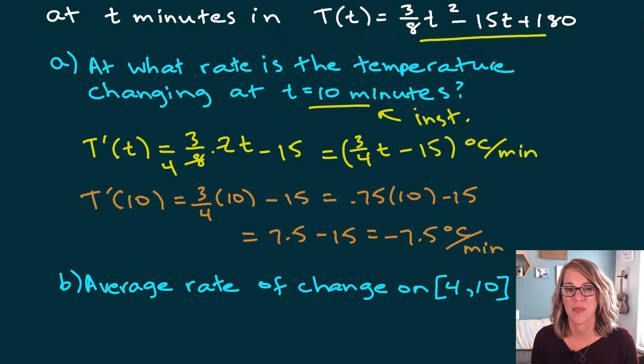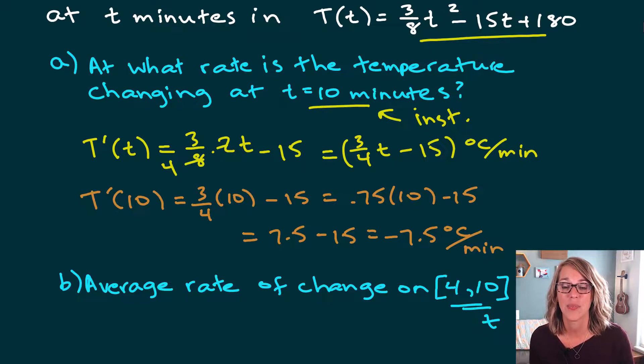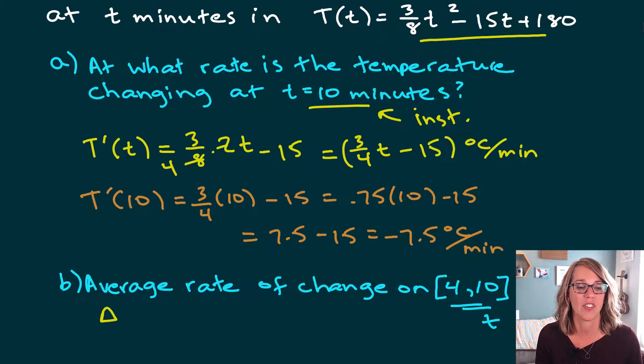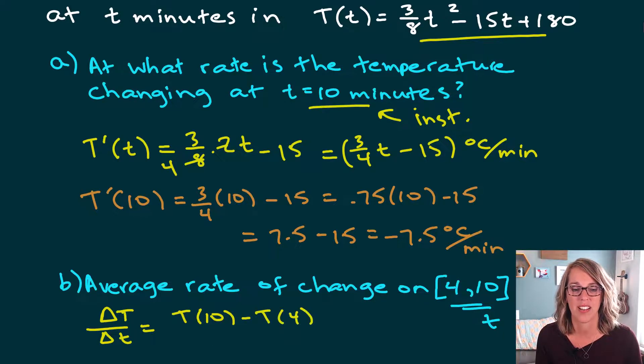This tells me that the temperature is going down and the object is cooling at about 7.5 degrees per minute. For the second part of the question, we want to find an average rate of change on the interval 4 to 10. Now, whenever we're working on an interval, it means that we're working on the interval for the variable of input, and that is our time t. So we know that that represents 4 minutes to 10 minutes. I need to use that average rate of change formula, which is really my slope formula.